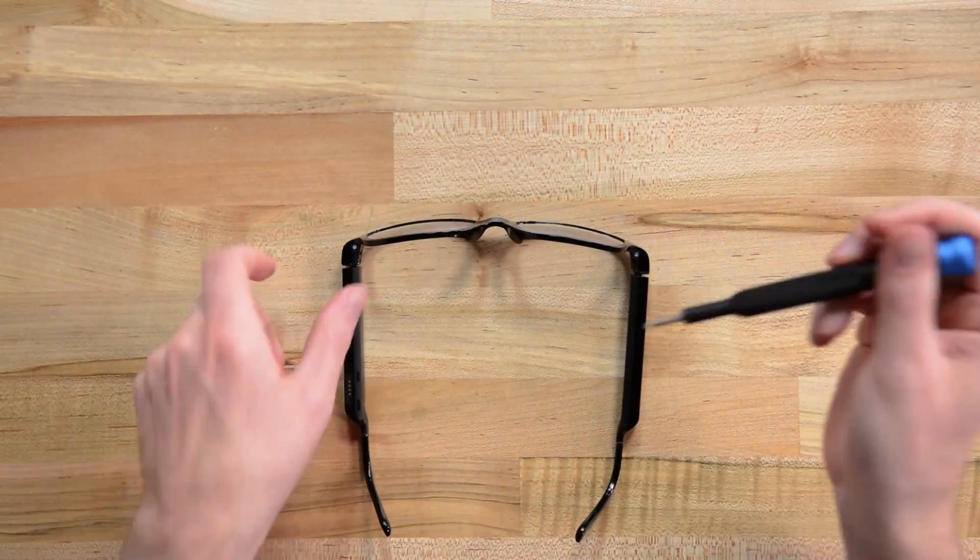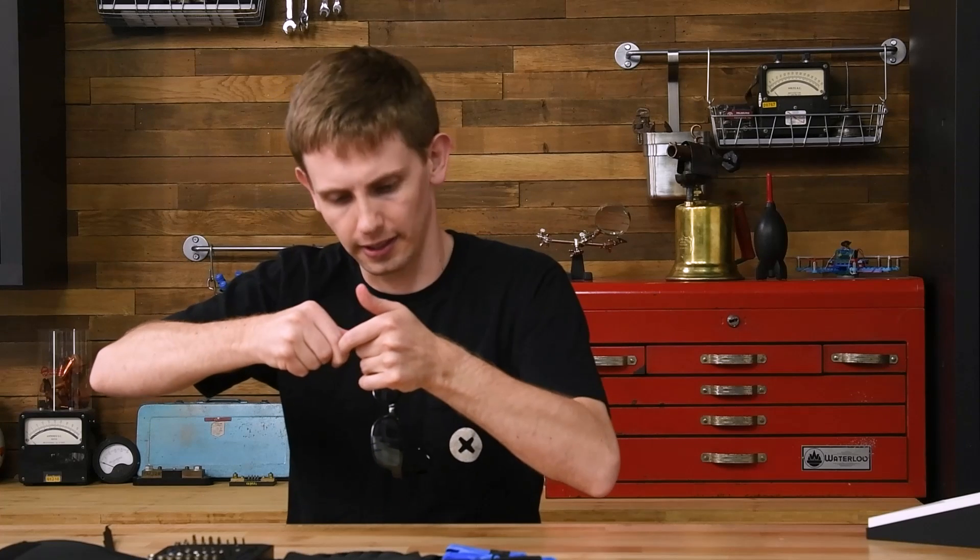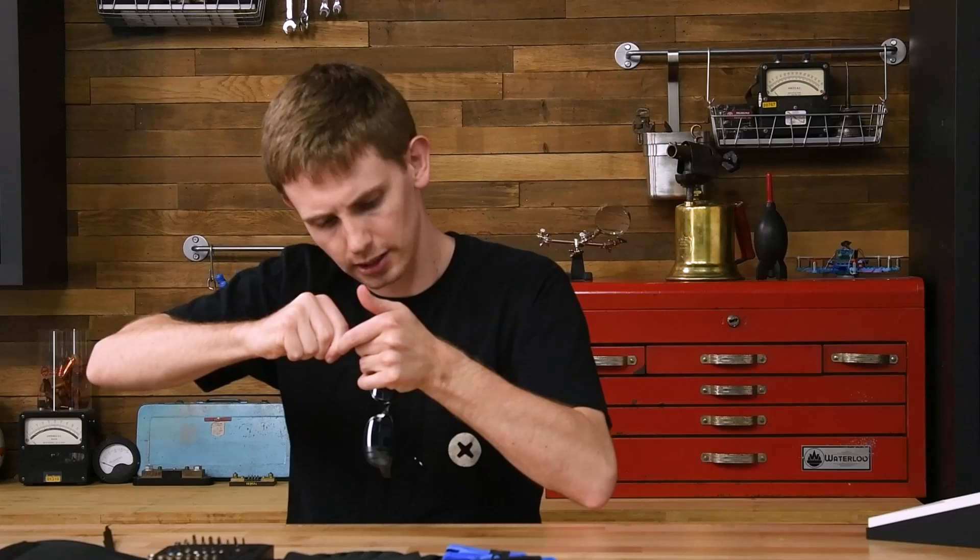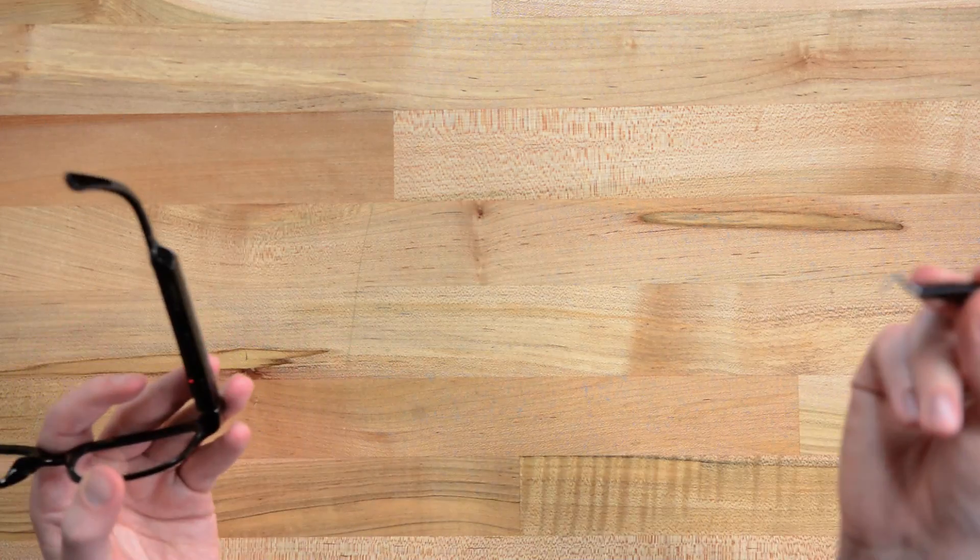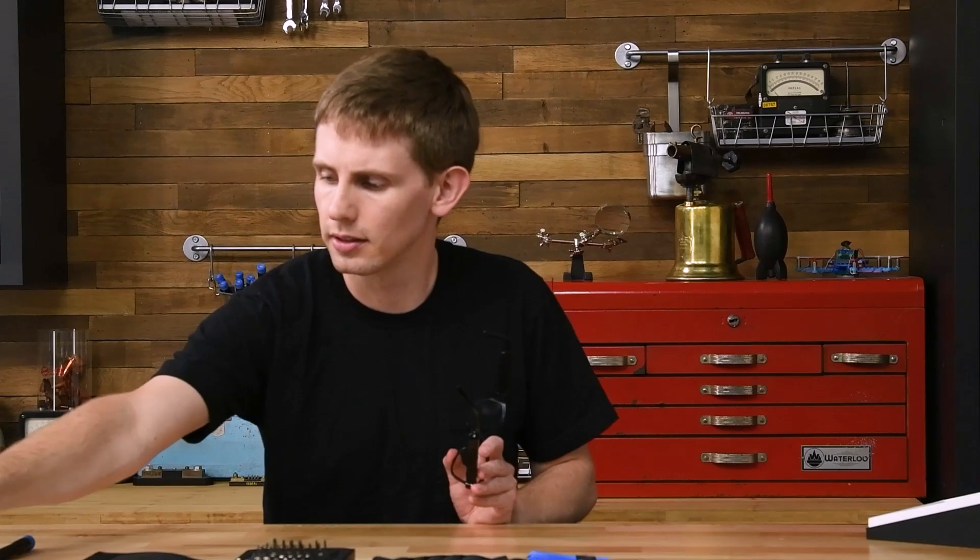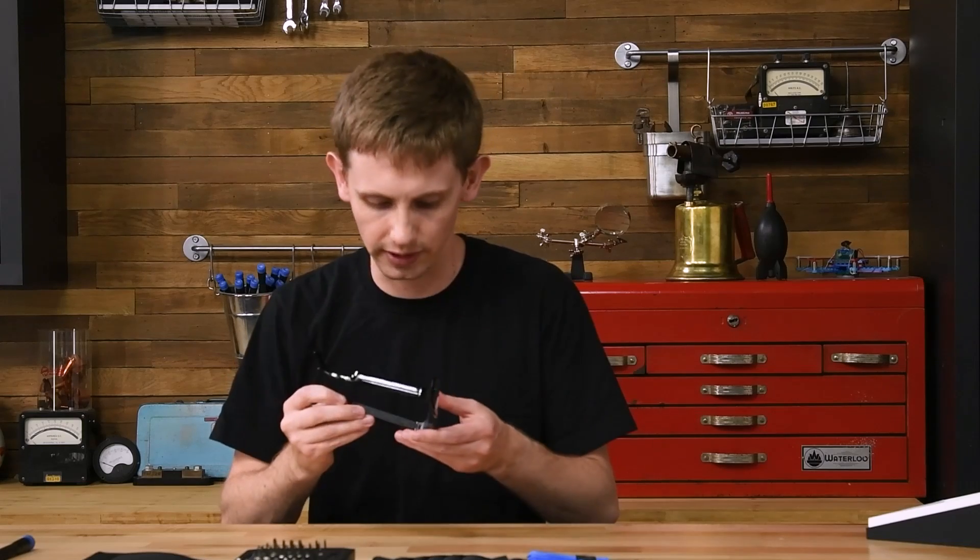These are super tight. I'm sure part of the problem here is there's adhesive also holding the screw in place. I'm probably pushing against some of that. All right. And there it is. That's the first screw. That was a little harder than I expected it to be, but not too bad, all things considering. I am going to leave the second screw for later. Let's just keep going on this arm. This is where all the interesting stuff is anyway.